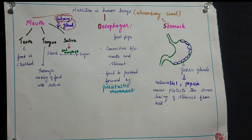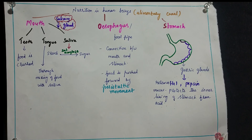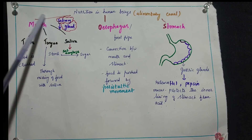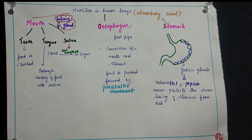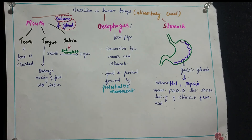Under heterotrophic nutrition, the next example is human beings — how humans obtain energy from food available outside the body. The process of taking in food through the mouth or any other source is called ingestion. Food enters through the mouth, and we need to study the stepwise process of complete digestion of each nutrient. The main nutrients are carbohydrates, proteins, and fats.